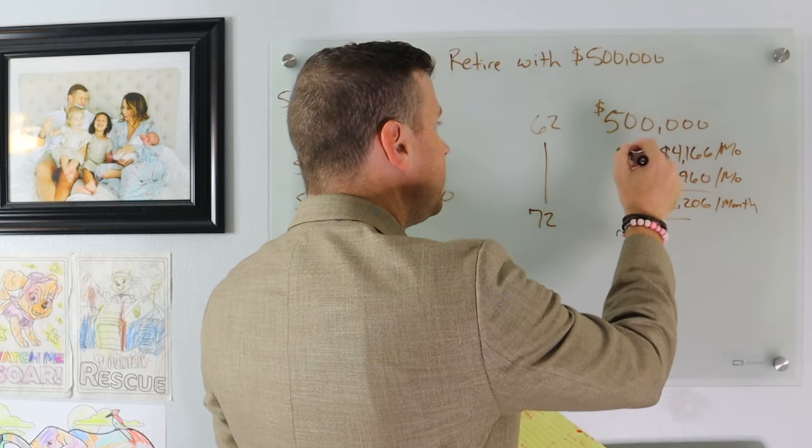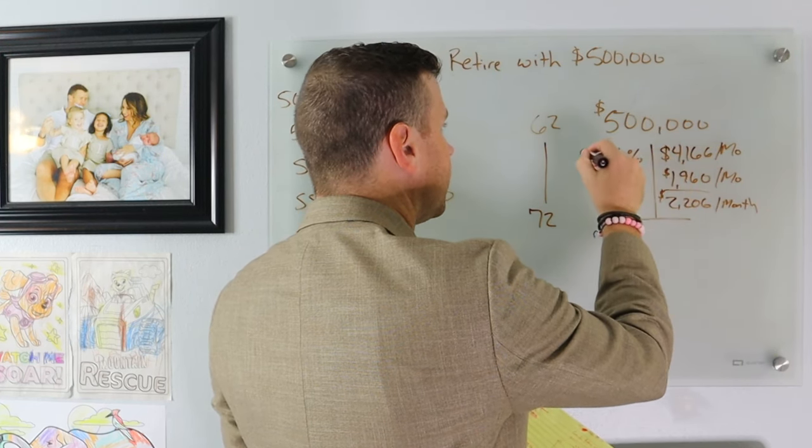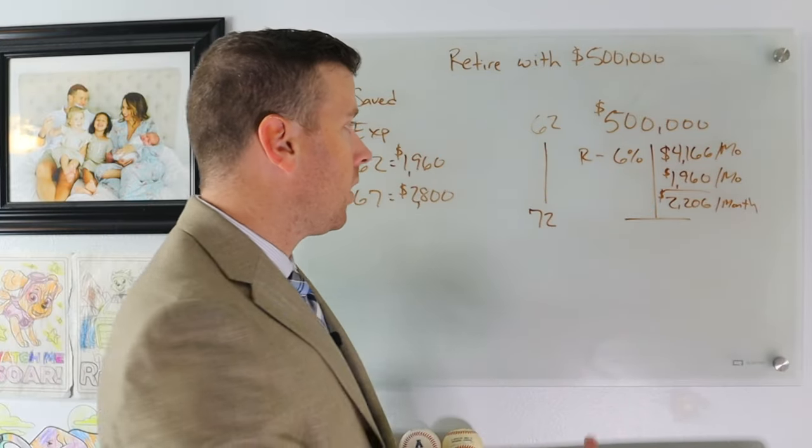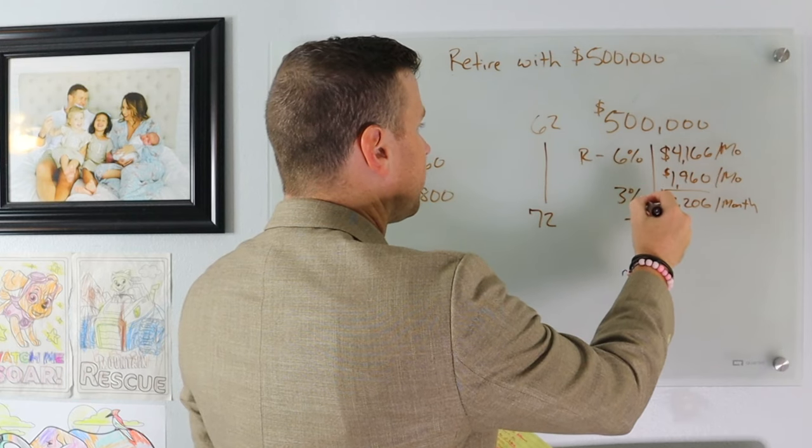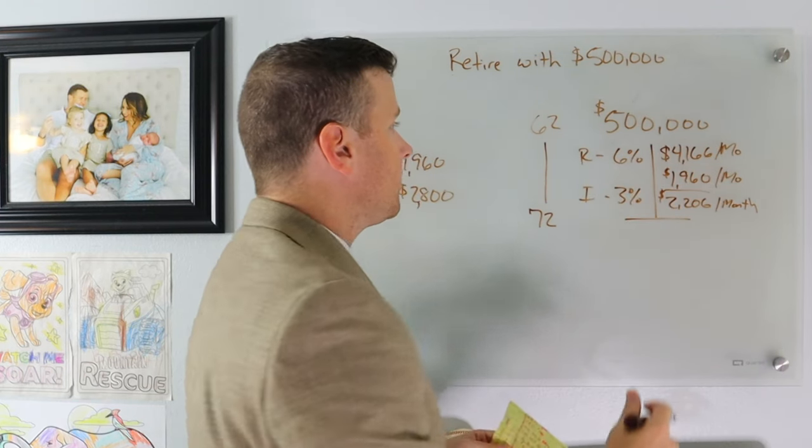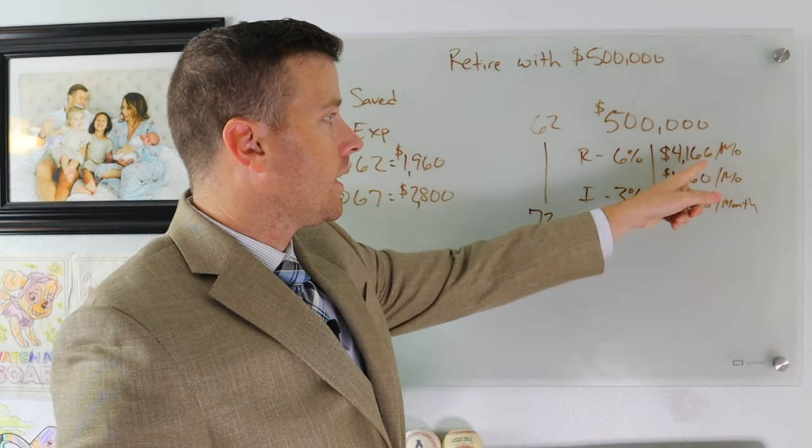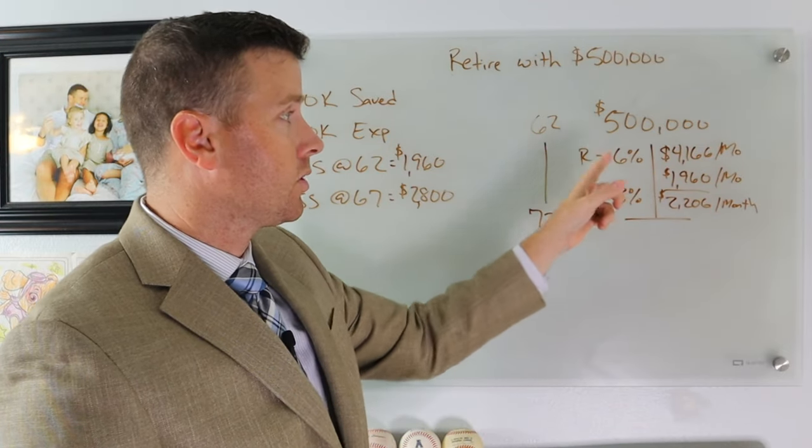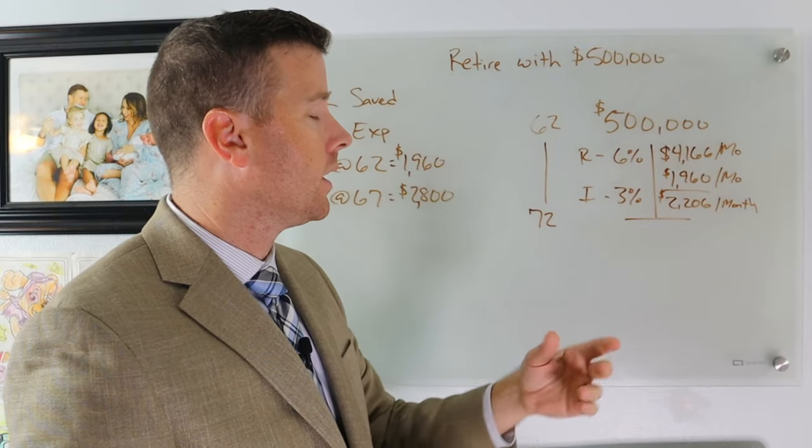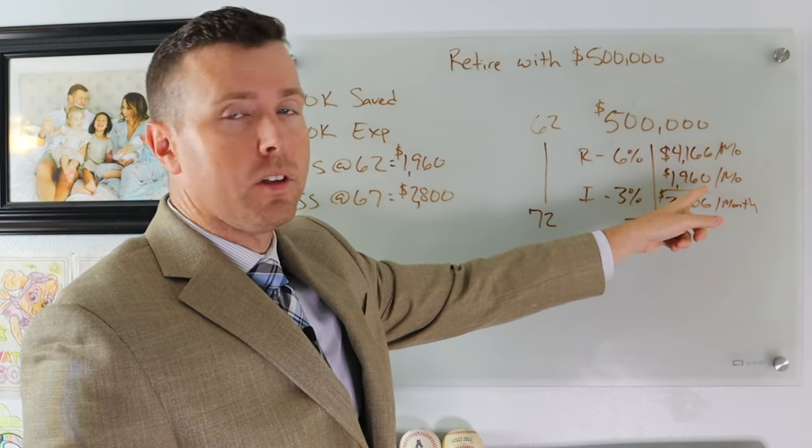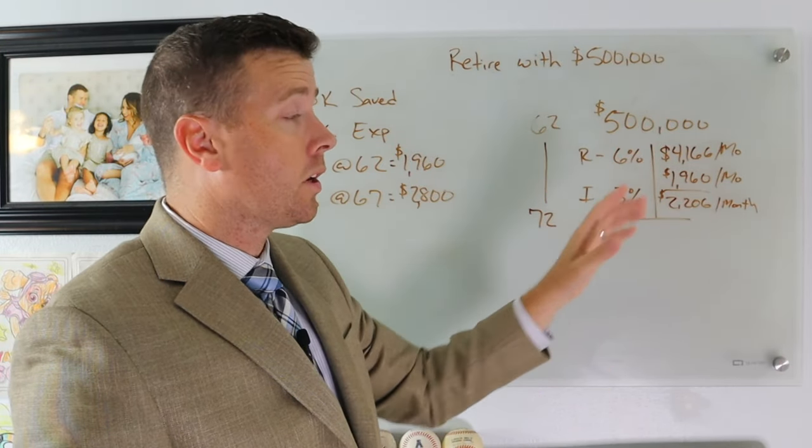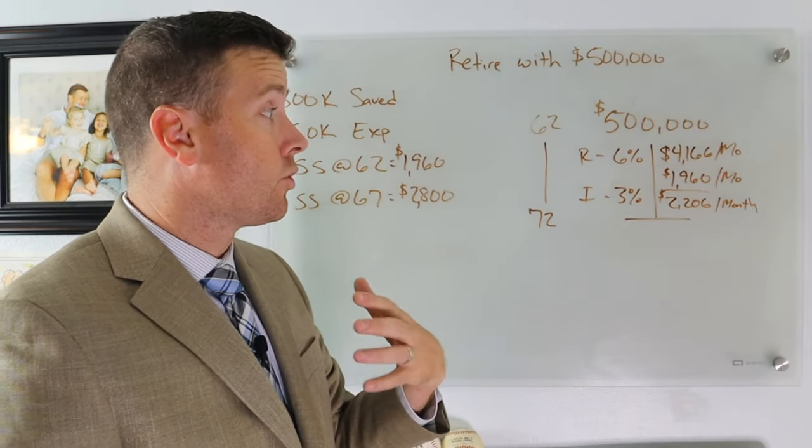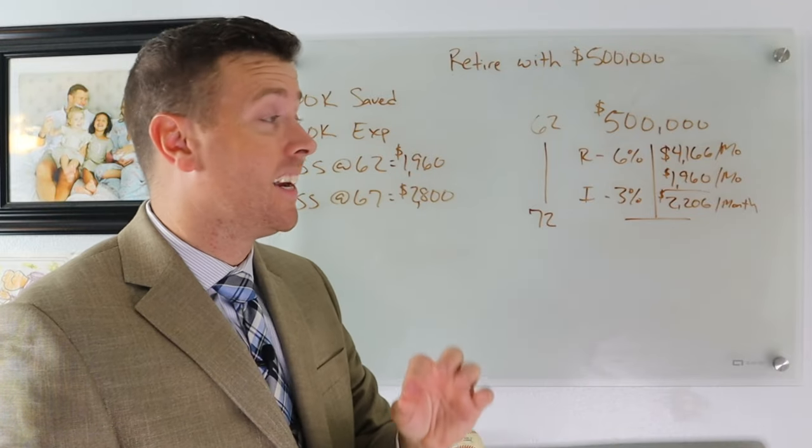The portfolio itself is going to earn 6% per year in the market. Inflation is going to run at 3% on our retirement expenses. Our investments are going to get a 6% rate of return in the market. And our Social Security, the $1,960, we are going to put a COLA increase on that so we can show what that actually looks like in the plan.